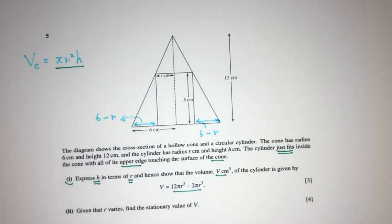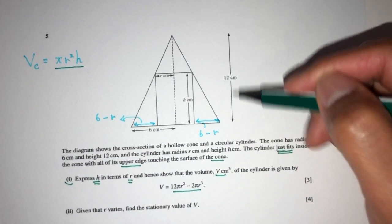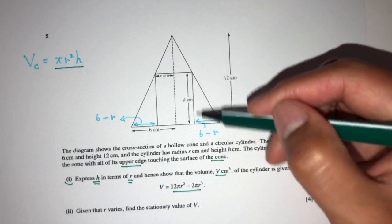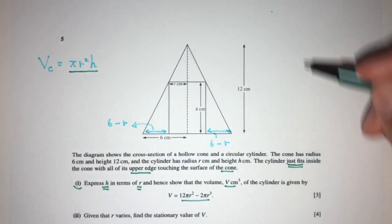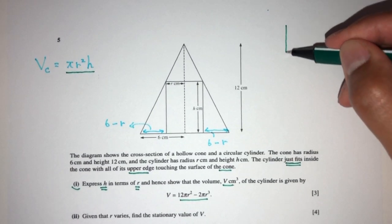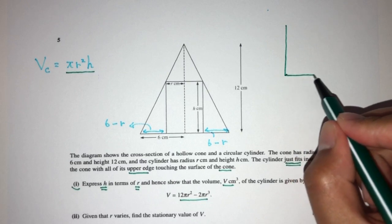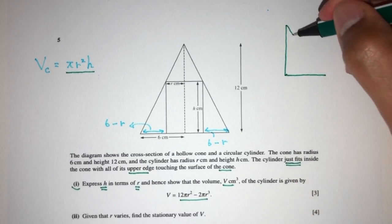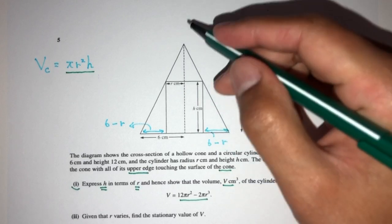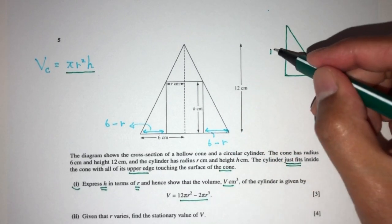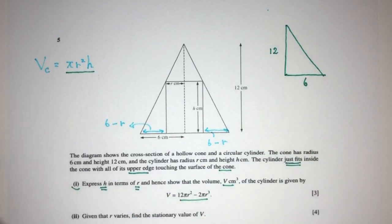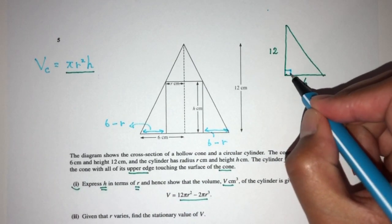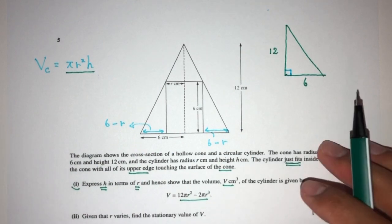And this big triangle is 12 and the height here is H. So if you realize, in this case we have two similar triangles. Let me draw this out. So first we have this big triangle. The height is 12 and the radius is 6. And this is 90 degrees obviously.